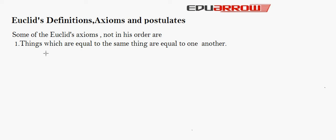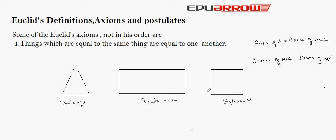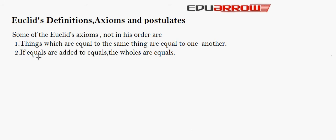Axiom 1: Things which are equal to the same thing are equal to one another. For example, if the area of a triangle equals the area of a rectangle, and the area of the rectangle equals the area of a square, then the area of the triangle equals the area of the square. Axiom 2: If equals are added to equals, the wholes are equal — meaning magnitudes of the same kind can be compared and added, but magnitudes of different kinds cannot. For example, we cannot add a line to a rectangle, or compare an angle to a pentagon.